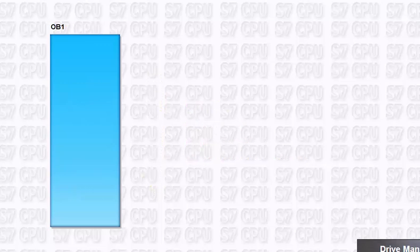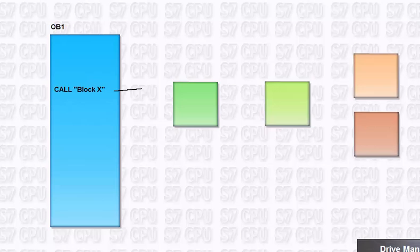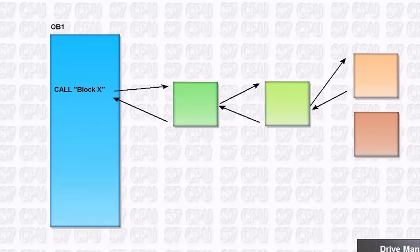The Step 7 block concept is predestined for the structured realization of this task. For processing the blocks, which control a technological or functional unit, they are called successively or stacked in an organization block. After they have been processed, the program automatically jumps back to the return address in the calling block. Step 7 offers you different block types for encapsulation of your subtasks depending on the application.